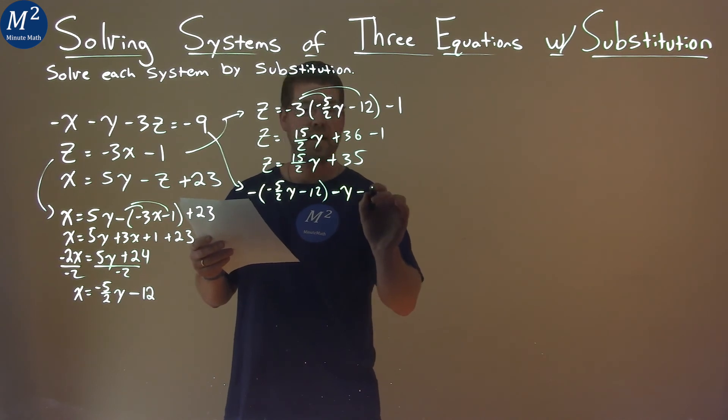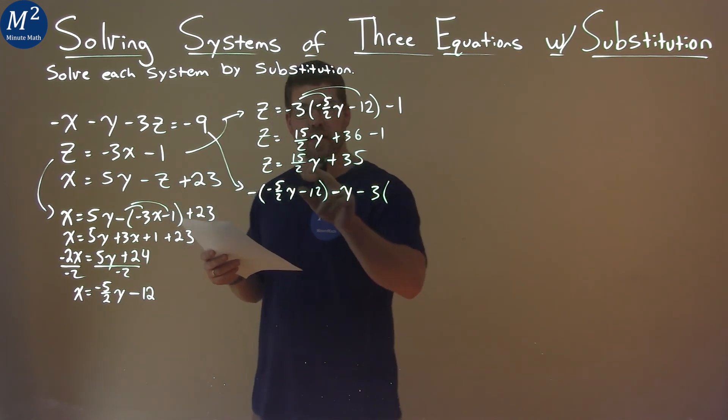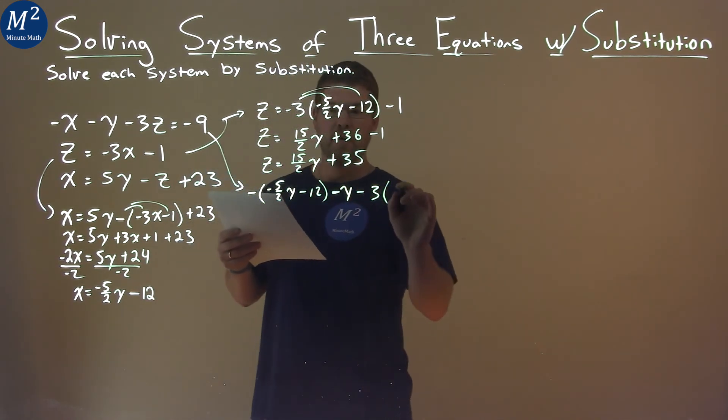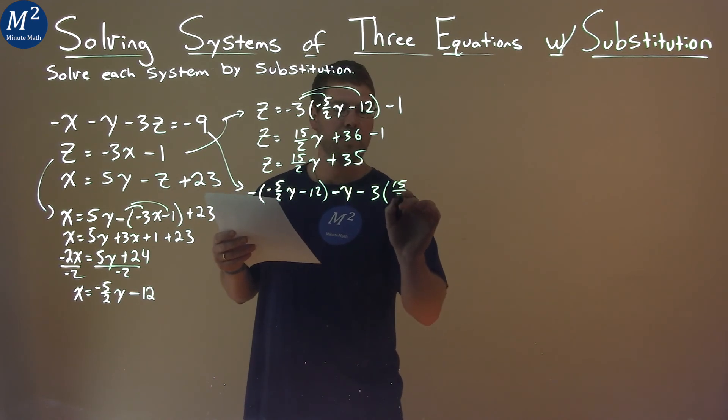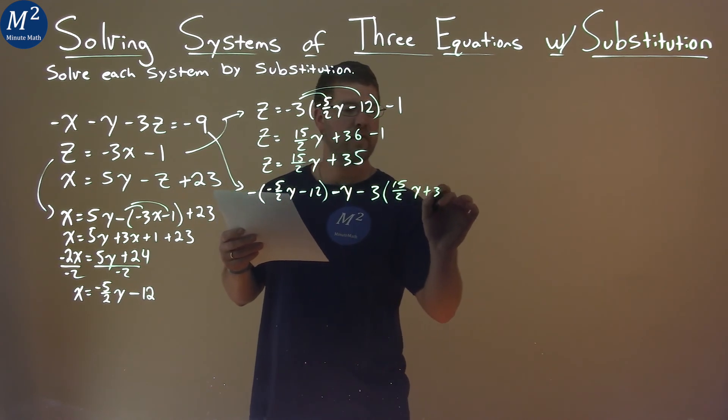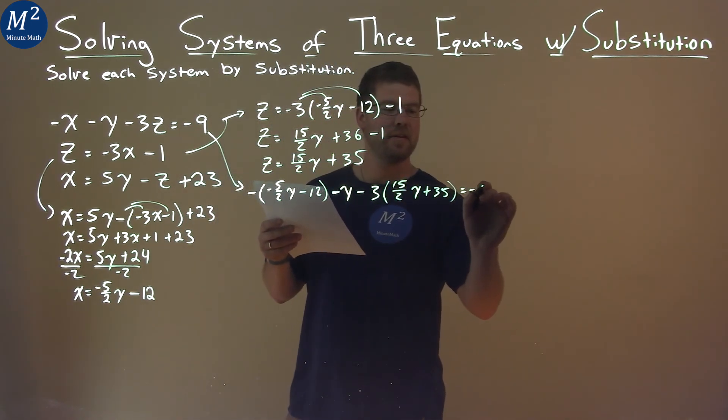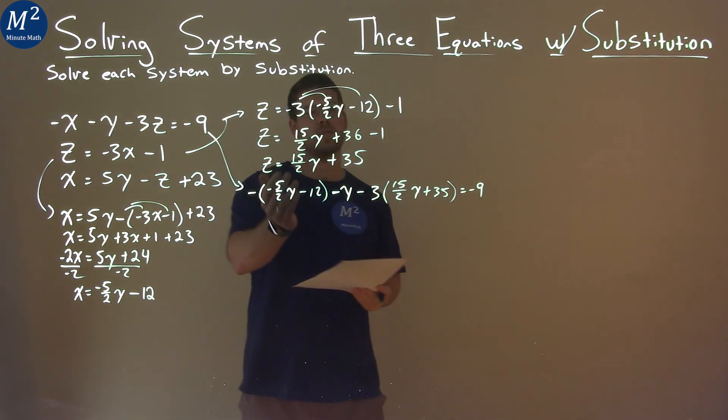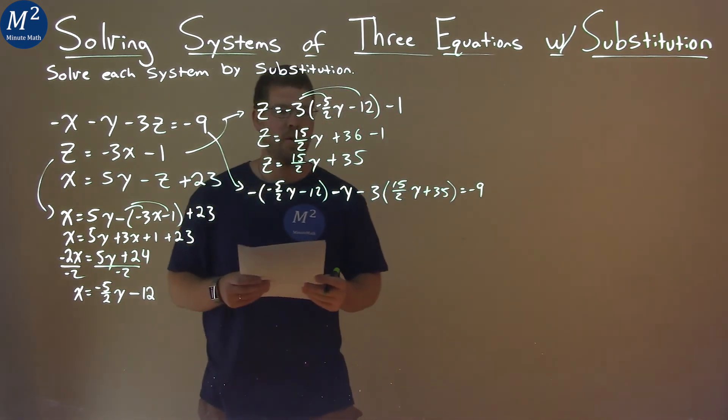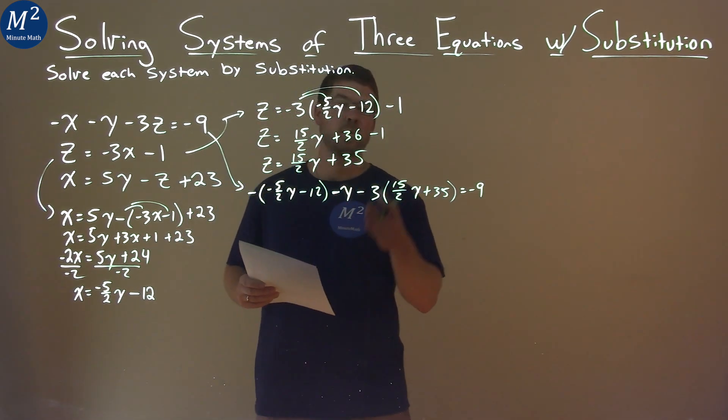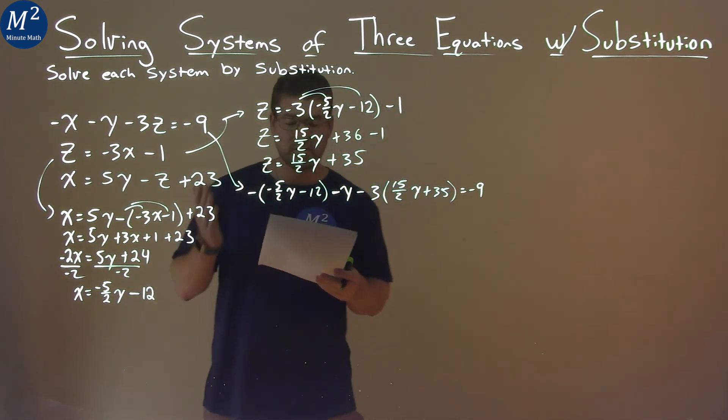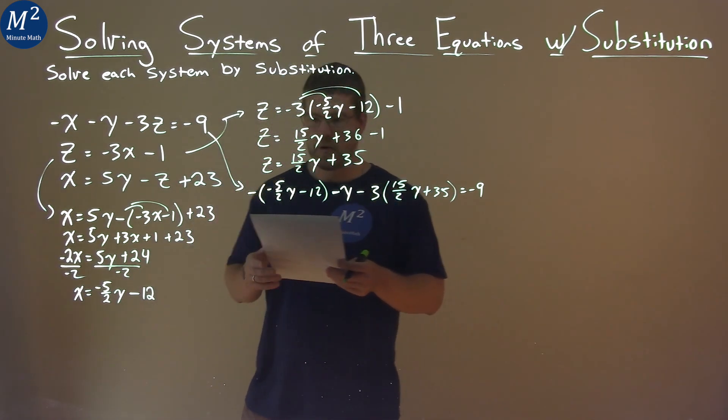Minus 3 times our z value which we found here: 15 halves y plus 35, and that equals negative 9. So I know this equation looks pretty crazy right now, but look, there's only one variable, y, meaning that we can solve for that y. So let's go for it.